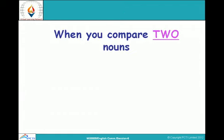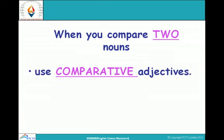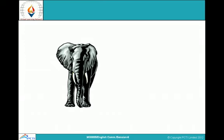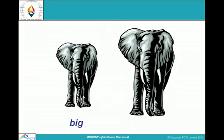When we compare two nouns, we use comparative adjectives. If we compare one noun to another noun, the adjective form becomes -ER.